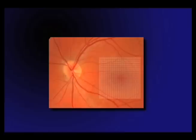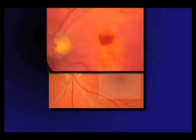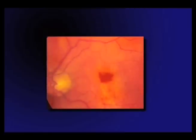When this patient has a new bleed in the macula and uses the Amsler grid, the grid shows an area of waviness.